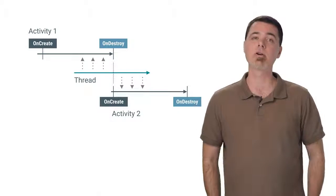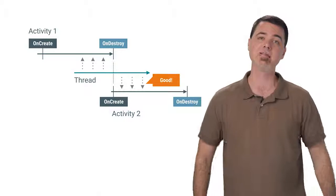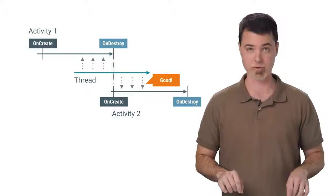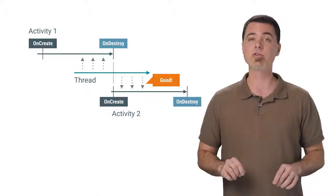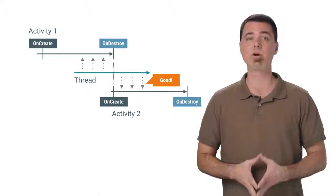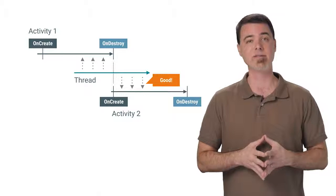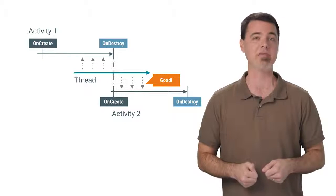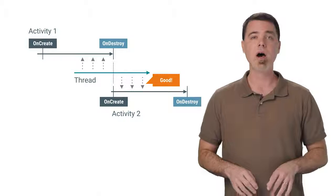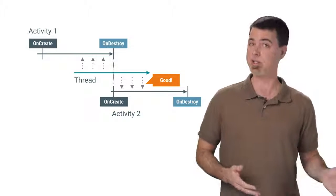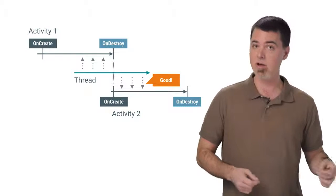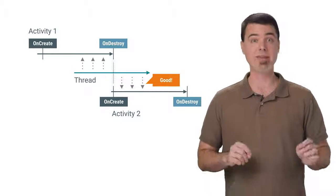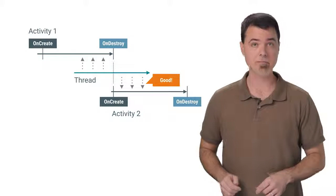To get your threaded work to correctly cope with the activity lifecycle and avoid these problems, you should use loaders. Loaders are wise to the inner workings of the activity lifecycle, so you can ensure your work ends in the right place every time. A properly implemented loader is resistant to activity leaks, always updates the correct views, and is never repeated unnecessarily.